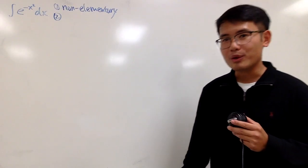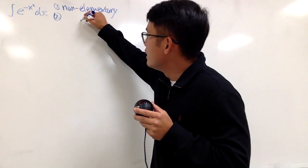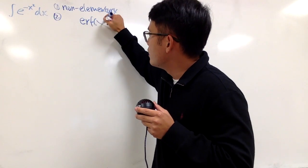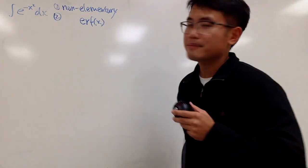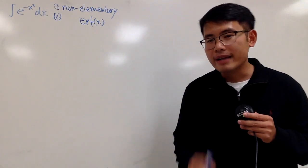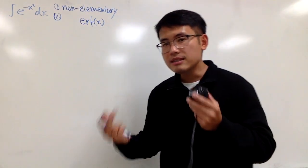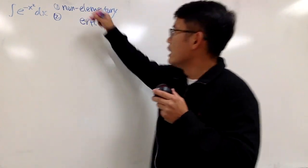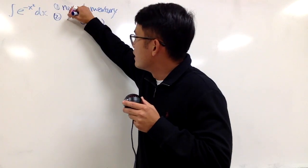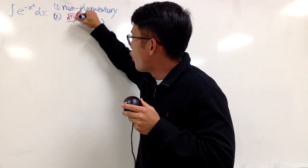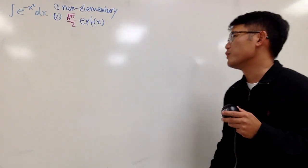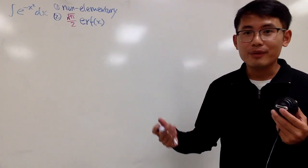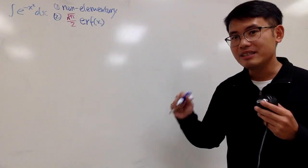The new function that we're going to use is what we call the error function, and the abbreviation is erf of x. But not quite — there is actually some constant multiple in front. That constant multiple is square root of pi over 2. You might be wondering why this is the case, so let's talk about this in detail.